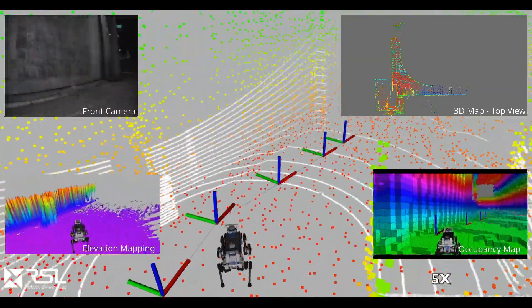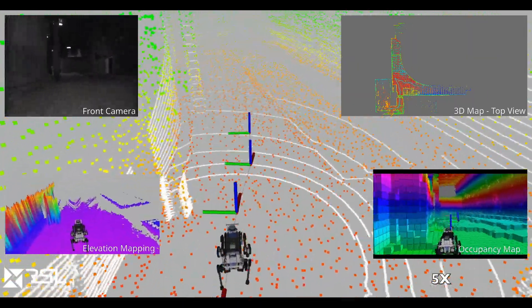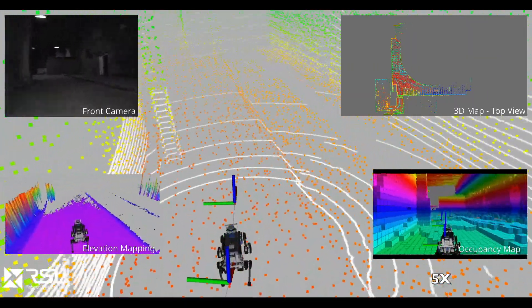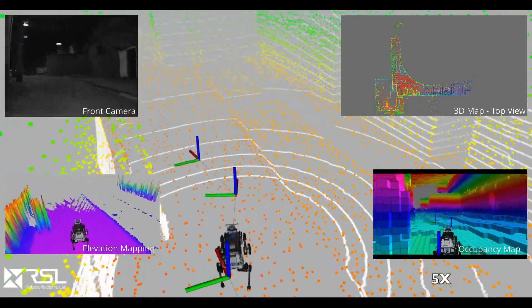The cameras observing the periphery of the robot are used to visually detect objects of interest, while gas sensors are used to detect potential leaks.